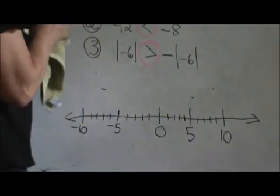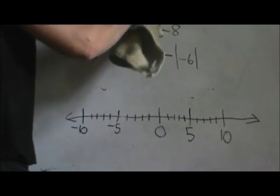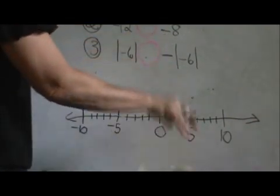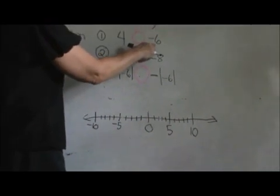So let's run through these three examples. So let's erase these and then discuss them. The first one is 4 comparing to negative 6.